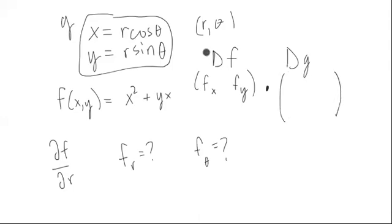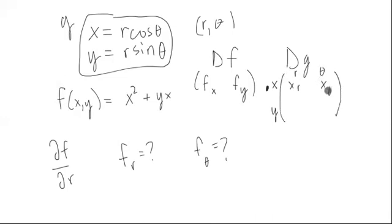The row represents the output and the column represents the input, with inputs r and theta, and outputs x and y. So we're going to have the derivative of x with respect to r, the derivative of x with respect to theta, the derivative of y with respect to r, and the derivative of y with respect to theta — forming that two-by-two matrix for dg.